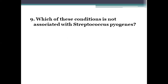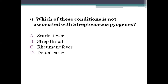Next question: which of these conditions is not associated with Streptococcus pyogenes? Option A, scarlet fever. Option B, streptococcal sore throat. Option C, rheumatic fever. Option D, dental caries. The right answer is option D, dental caries. Scarlet fever, sore throat, and rheumatic fever are all caused by Streptococcus pyogenes. Dental caries is caused by Streptococcus mutans.